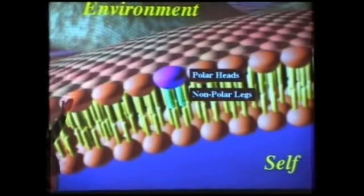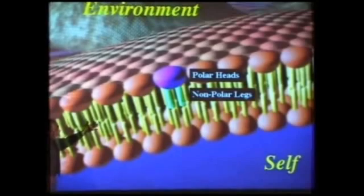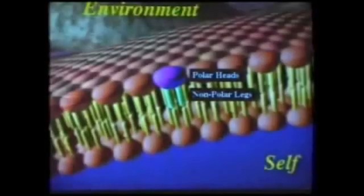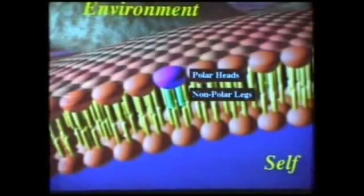As a result, the membrane makes a fine barrier, because whatever is in the outside environment — generally dissolved in water — is generally not able to pass through the membrane because of the oil phase in the center. Here's a picture of the human cell membrane under electron microscopy, and you can see the dark-light-dark layering, which matches the model almost exactly.